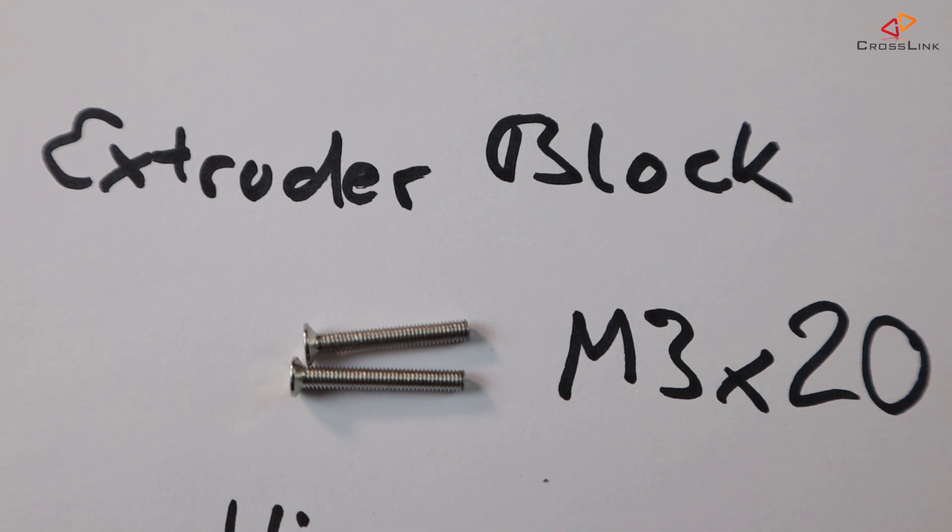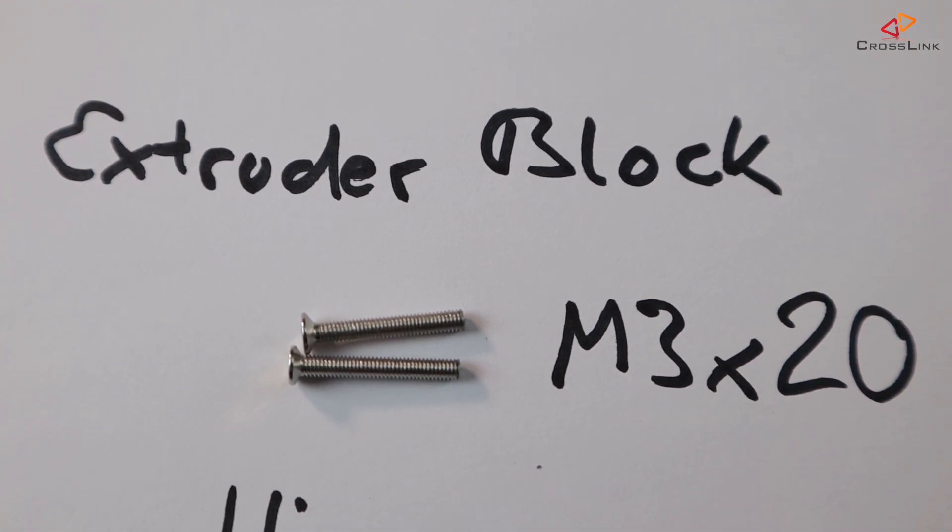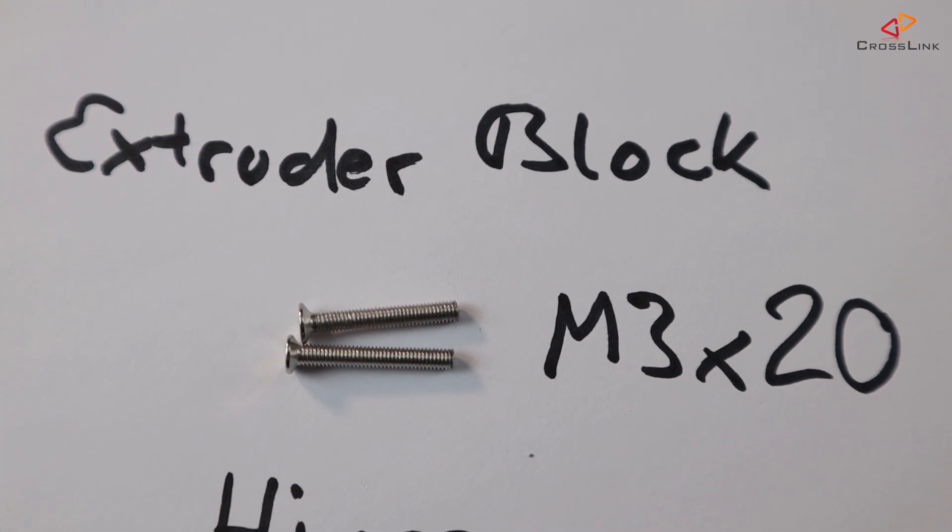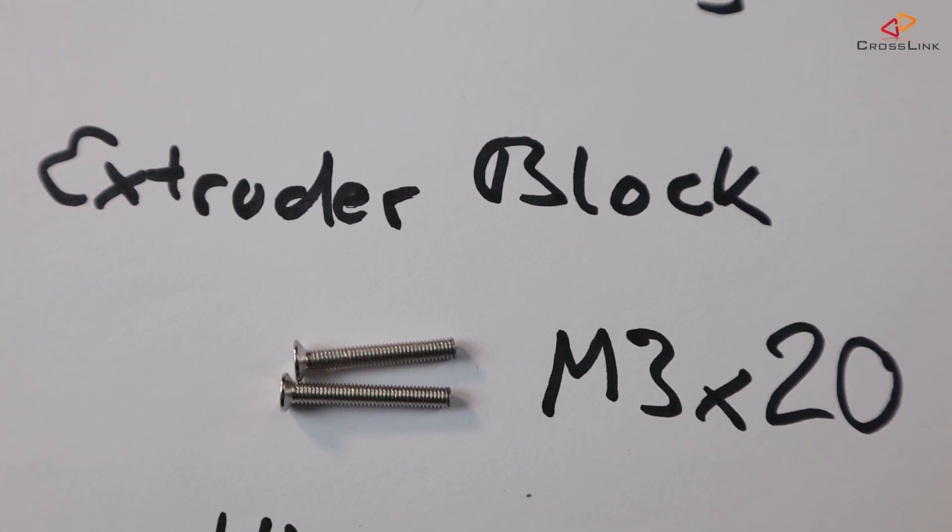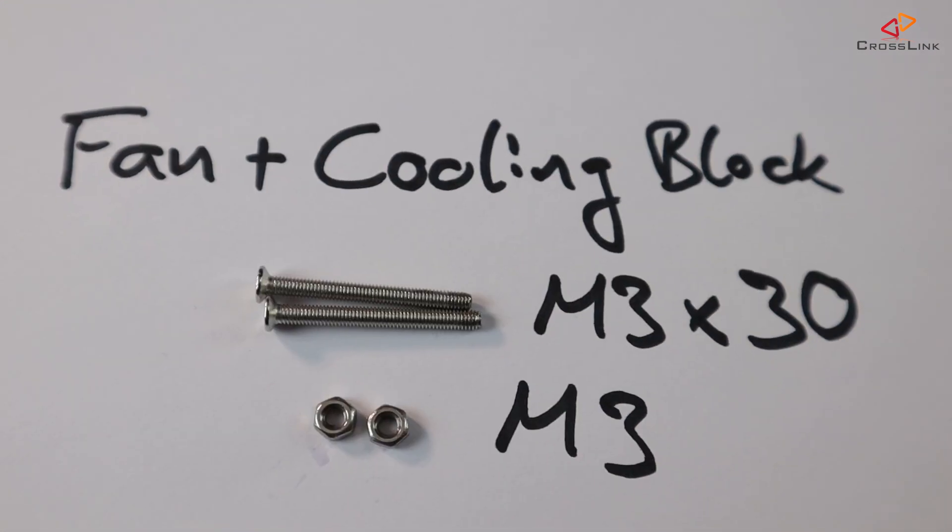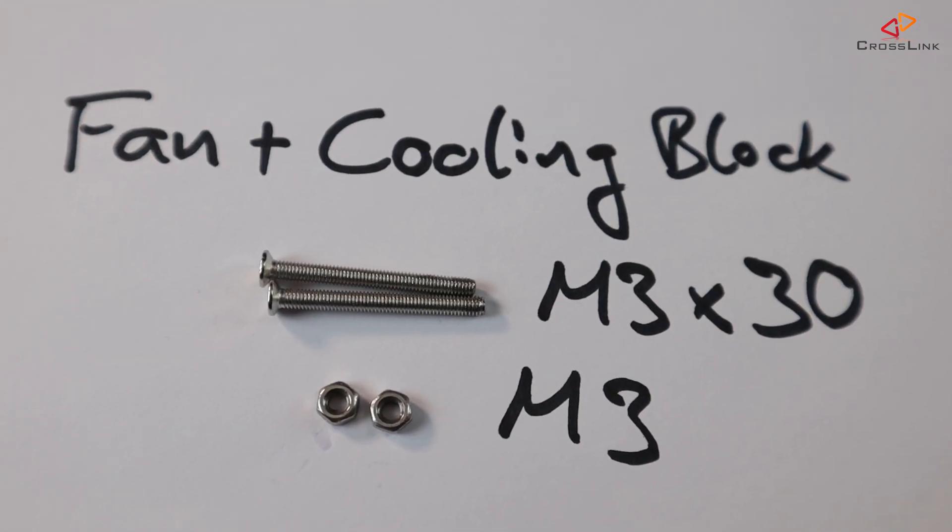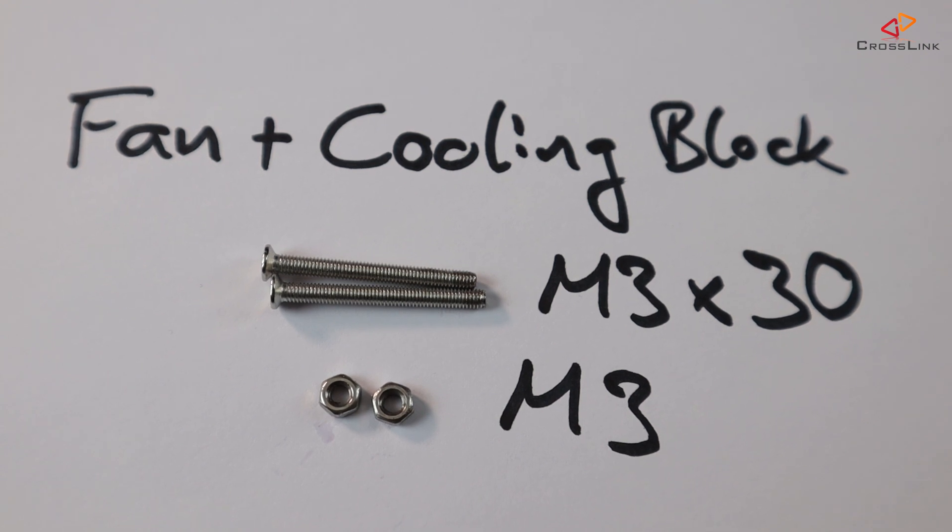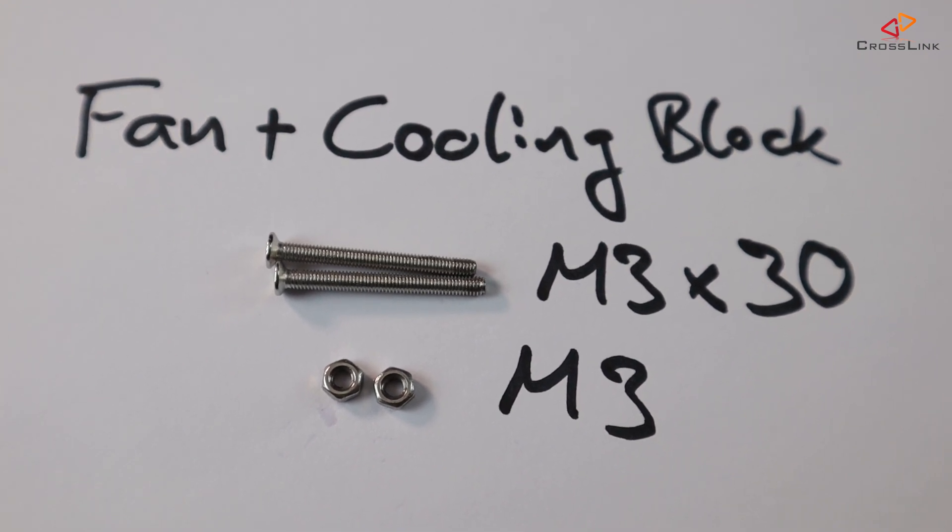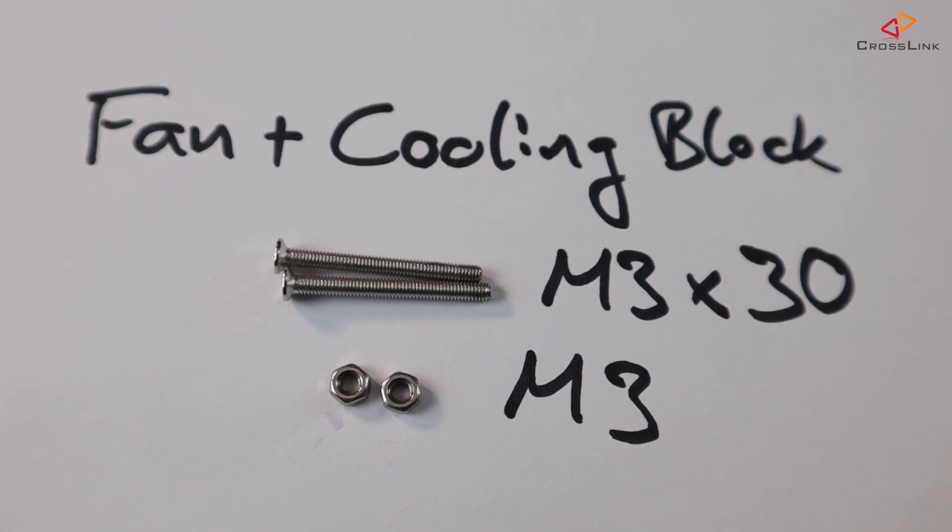We will use two countersunk screws M3x20mm or we can also cut two of the M3x30mm screws that come with the printer by about 9-10mm. Also, we will need two countersunk screws M3x30mm and two 3mm nuts to fix the cooling block to the fan and the fan hinge part.